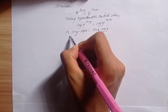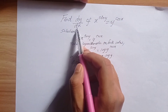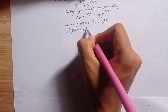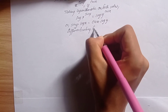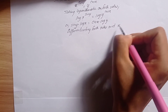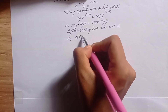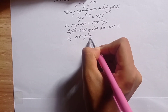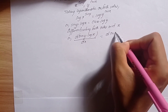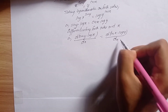Now differentiating both sides with respect to x. The left-hand side is the derivative of sin y times log x with respect to x, and the right-hand side is the derivative of cos x times log y with respect to x.